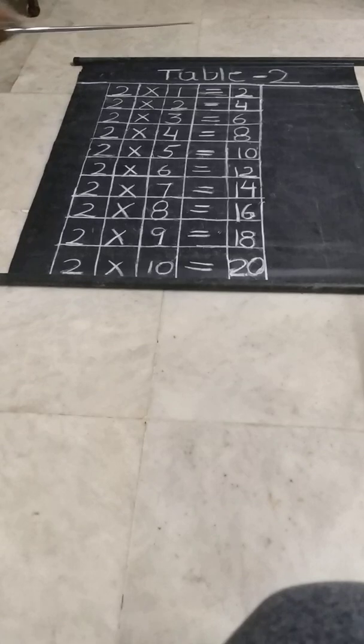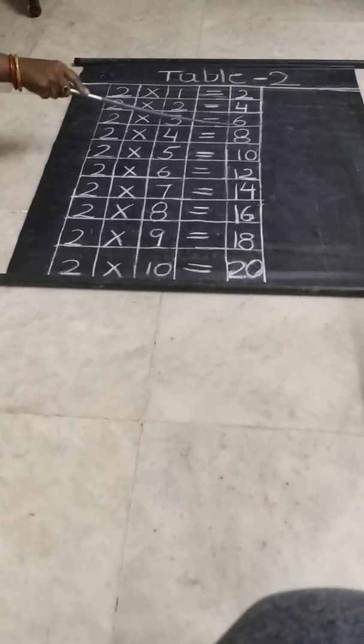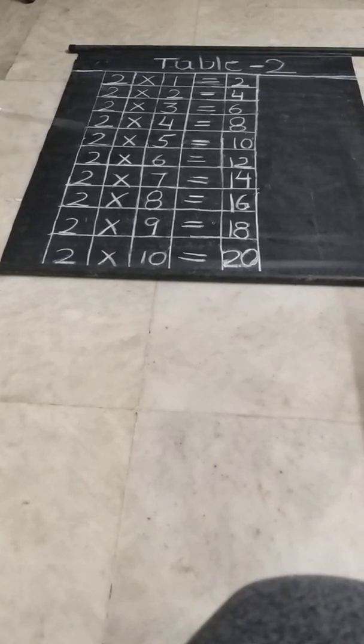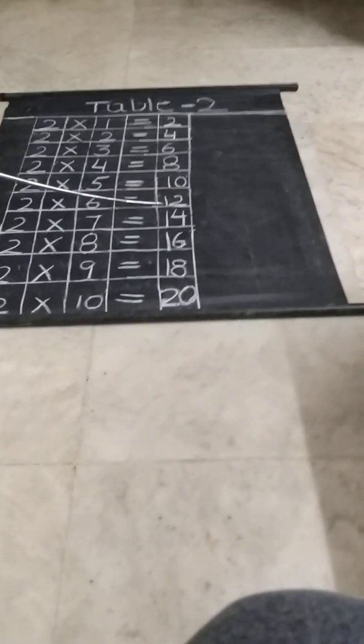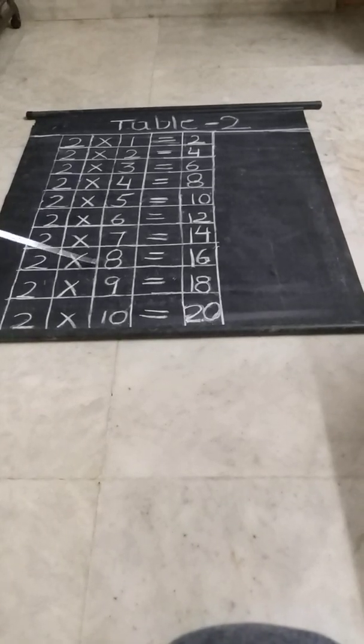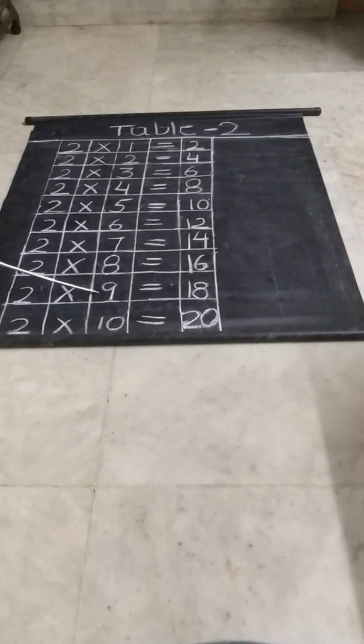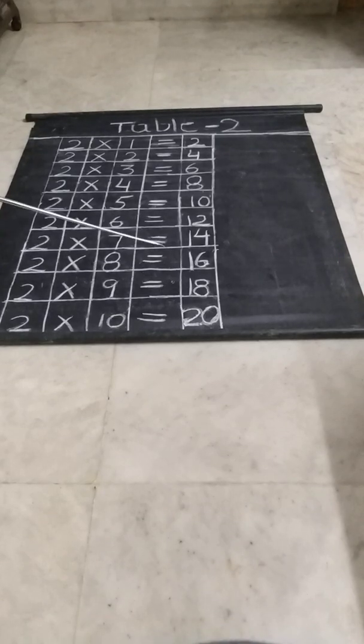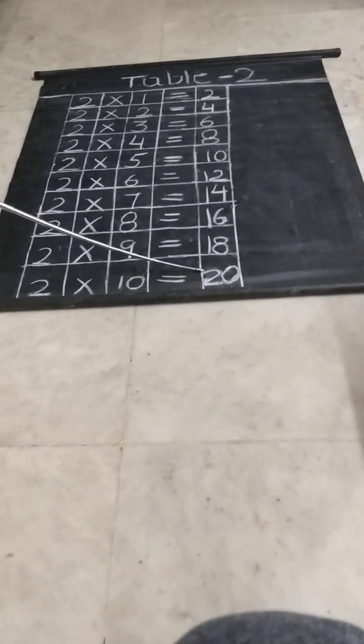The second one is the interesting way, right children? So come on, say with me. Two 1's are 2. Two 2's are 4. Two 3's are 6. Two 4's are 8. Two 5's are 10. Two 6's are 12. Two 7's are 14. Two 8's are 16. Two 9's are 18. Two 10's are 20. Again.